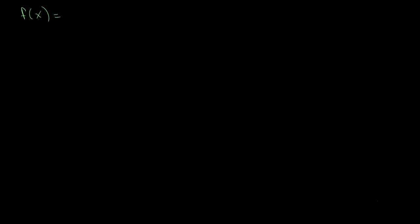Now let's look at what happens when we take the absolute value of a function rather than a single number. Take the example where f(x) is equal to the modulus of 2x plus 1. Since absolute value always gives the positive version of a number, the output will never be less than zero — so f(x) is always greater than or equal to 0.